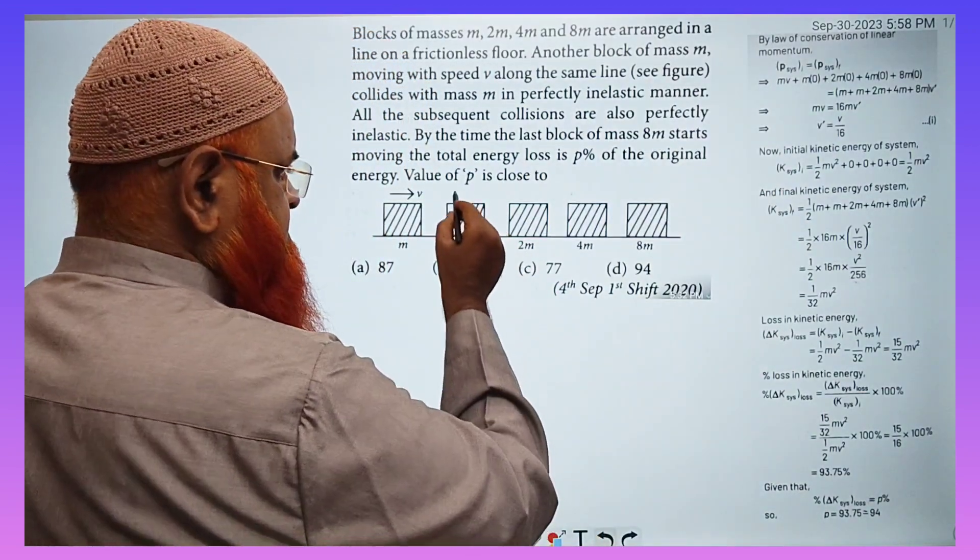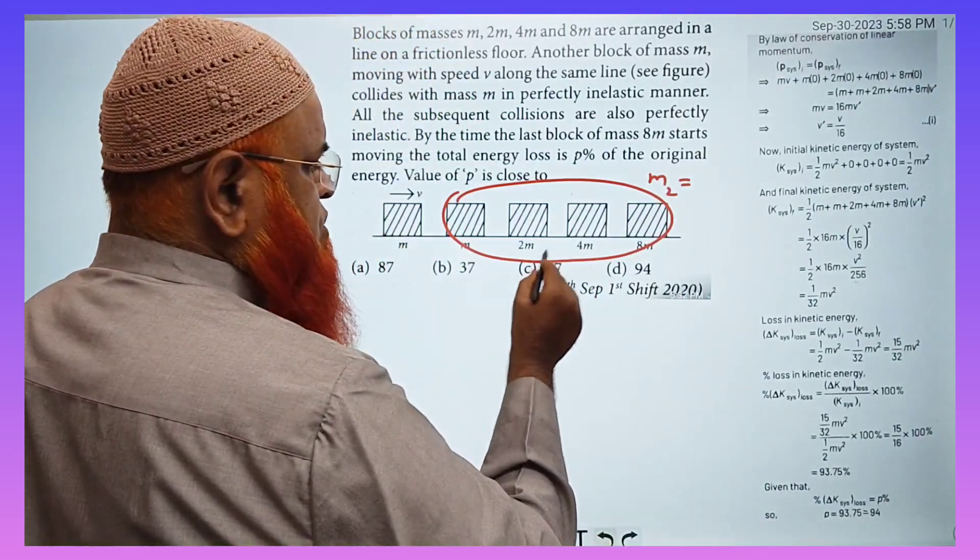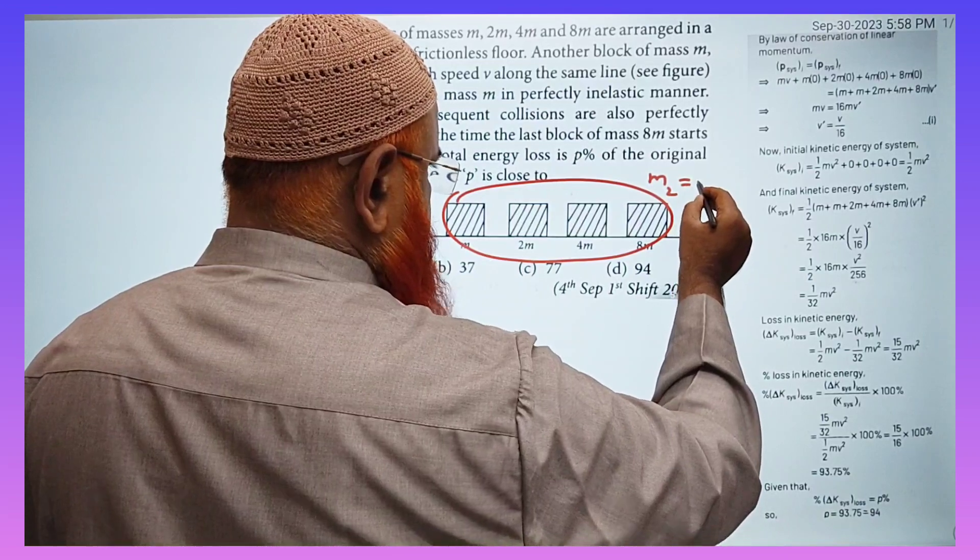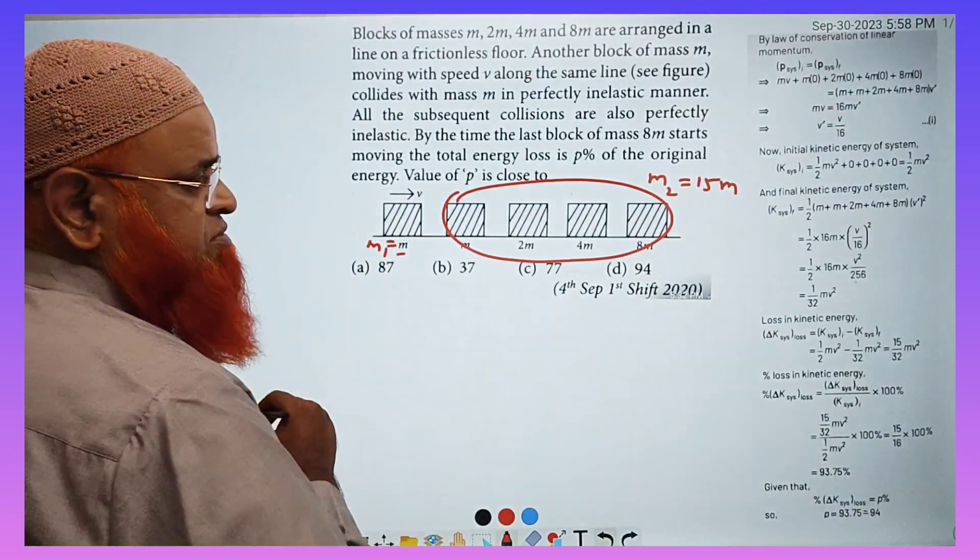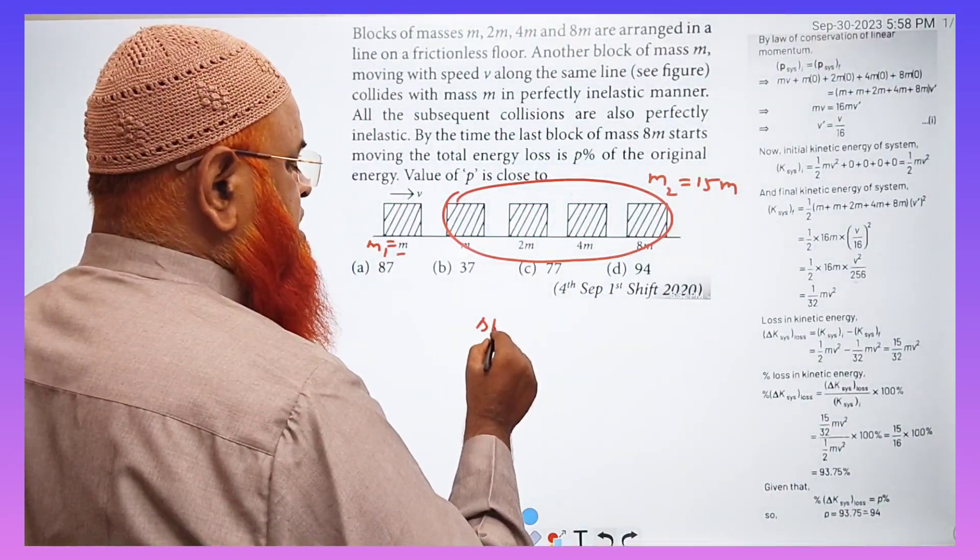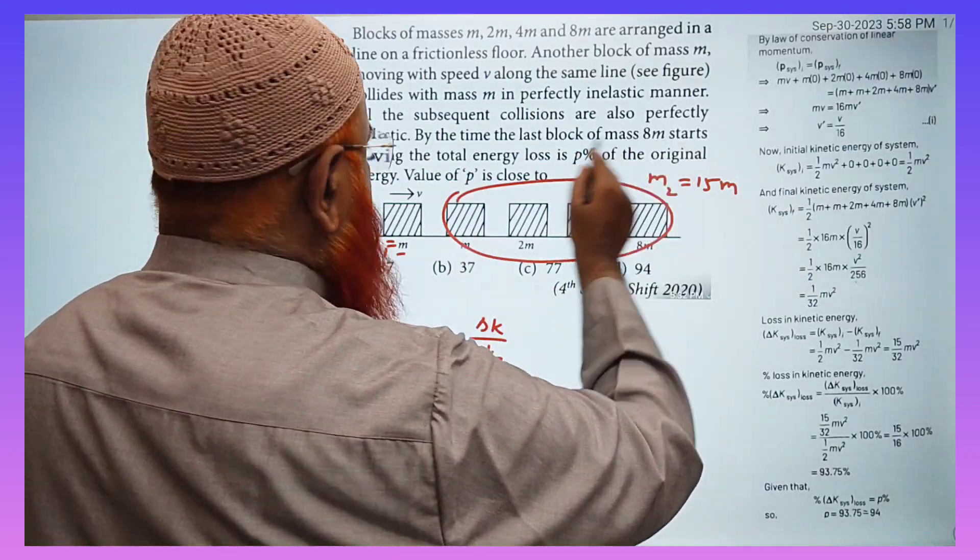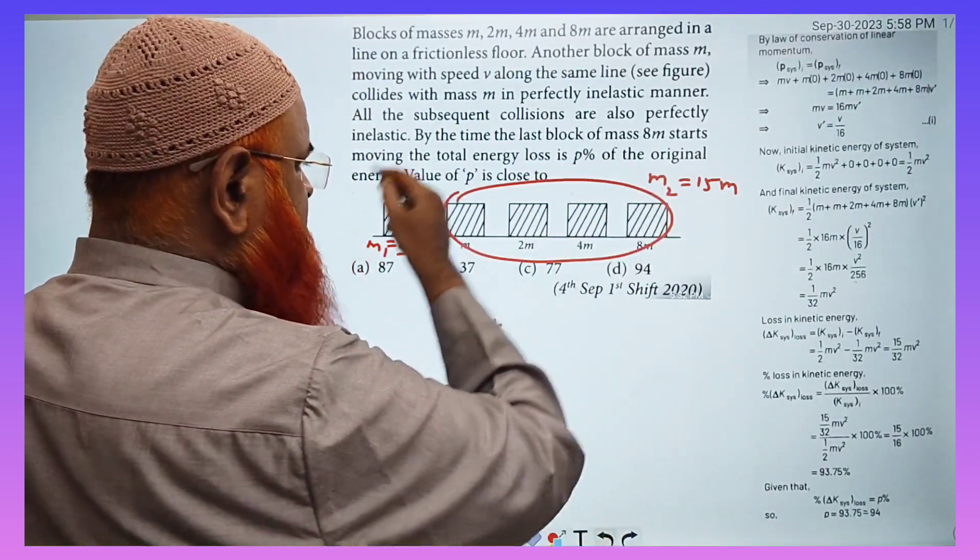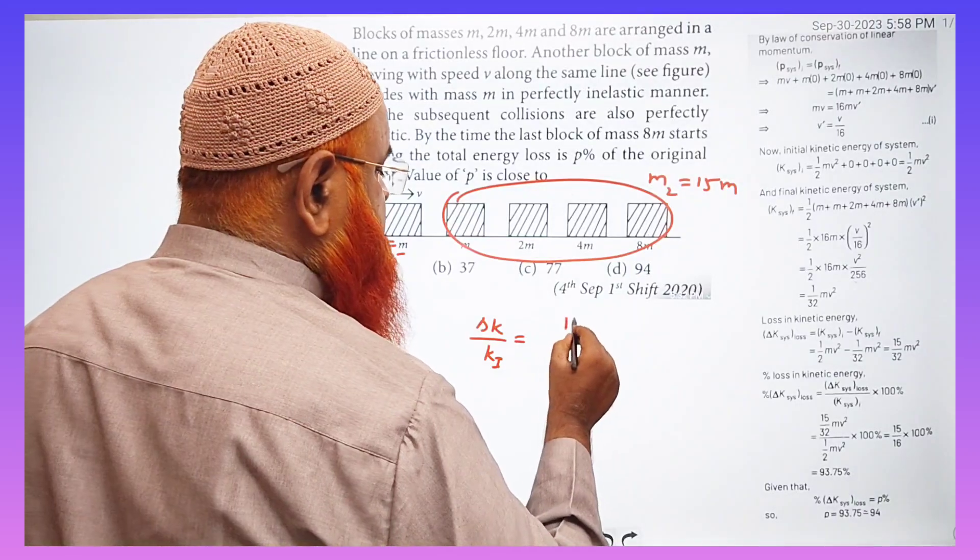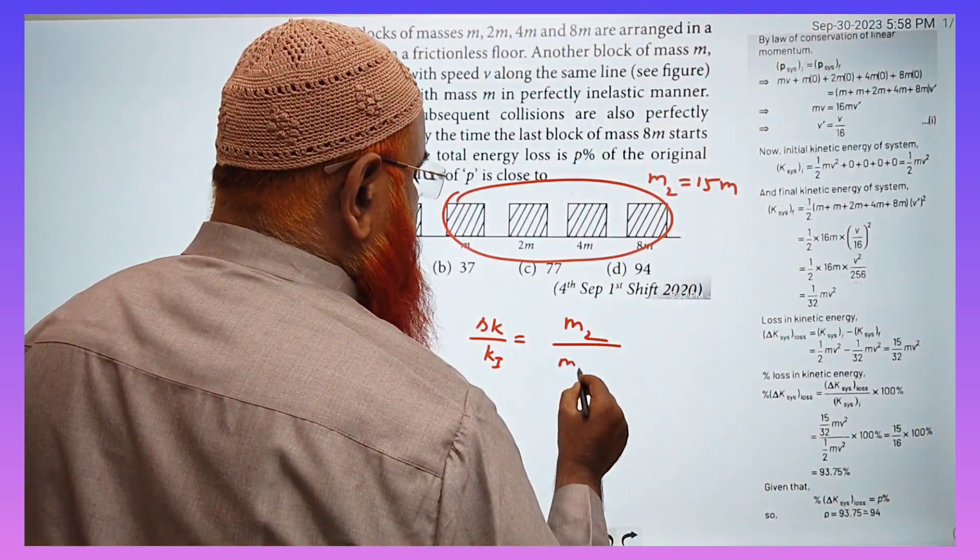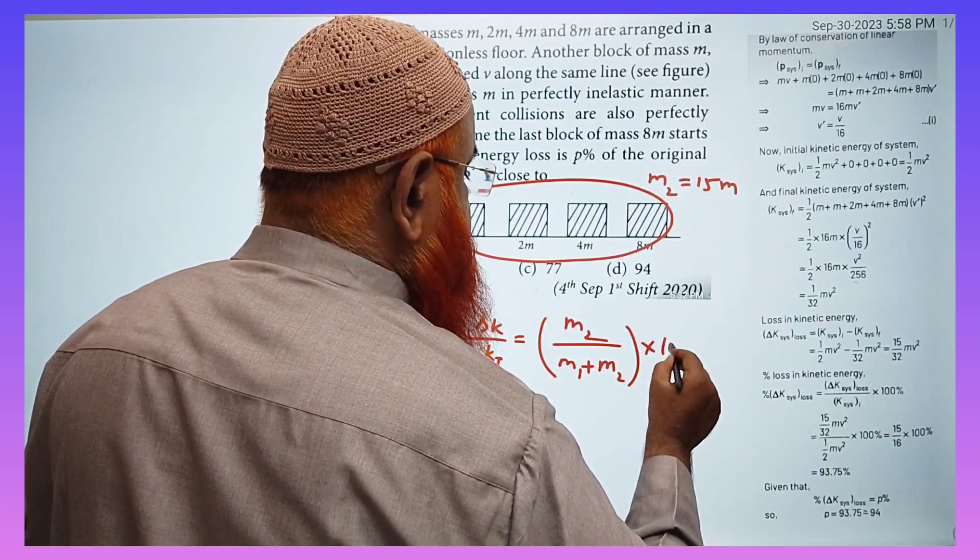So here, the simple technique is I'll take all these blocks as body of mass m₂, and m, 2m, 4m, and 8m are combined to become 15m. And this is a body of mass m₁ which is just m, that's it. You can find out the percentage loss, that is ΔK by K initial, because he's asking for the total energy loss to that of the original energy. So total energy loss to that of initial energy, that is the meaning here.